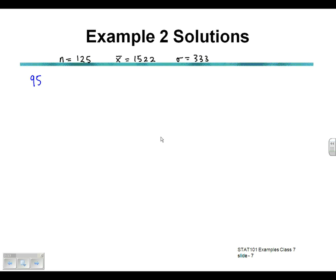If we write down our formula for the confidence interval, the 95% confidence interval will be equal to the x-bar value plus and minus the z-score for an alpha value of 0.05. A 95% confidence interval means alpha is 0.05, so alpha over 2 when we divide by 2 to put half at each end, multiplied by sigma divided by the square root of n. Notice that formula is made up of three parts: the mean value, the z-score, and sigma divided by the square root of n, which is the standard error.